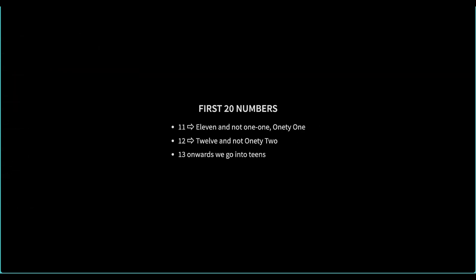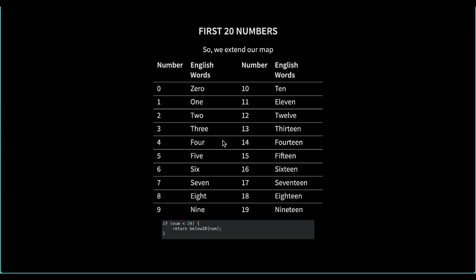For numbers after 10 we continue to see irregular English words instead of a pattern. When we see 11 we get 'eleven', not 'one-teen'. For 12 we return 'twelve'. From 13 onwards the teens start, so again we hard-code everything and put them in the map. Let's rename our map to 'below 20' to reflect this. When someone passes a number less than 20 we just return it from the map, because there is no logic involved — that's how the English language is.